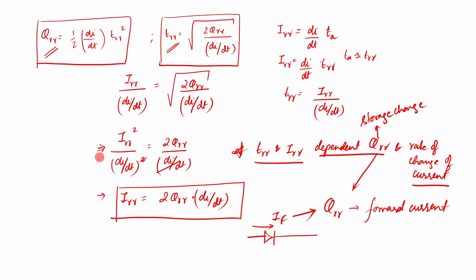So in this particular equation you can see it is not a major correction actually. You can see that IRR square divided by (di/dt) the whole square is equal to 2QRR divided by (di/dt). So we can cancel this and we can cancel this. So finally you will get IRR square, I forgot to put this, so IRR square is equal to 2QRR into (di/dt). So I just forgot to put the square root in the final equation. So the final equation IRR will be equal to root of 2QRR into (di/dt).